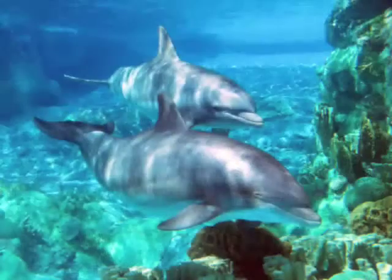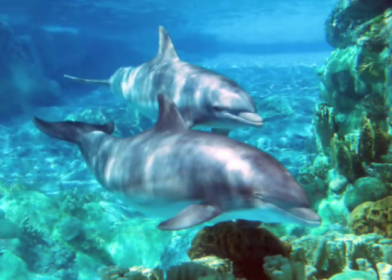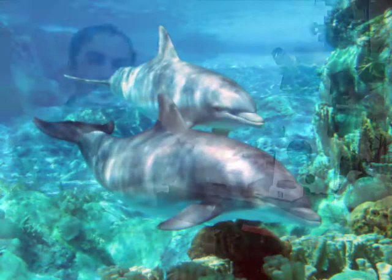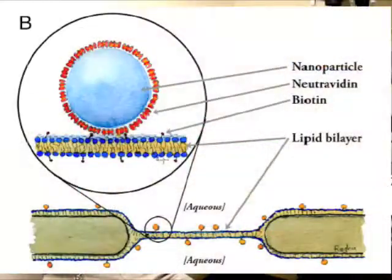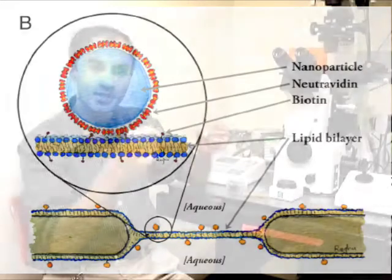For decades we've envisioned cellular membranes as pure liquids. We think about proteins moving around in a membrane kind of like a dolphin moving through water, being in a nice liquid environment. But we did experiments looking very carefully at how objects in a membrane behave and we find that they have this solid-like behavior.